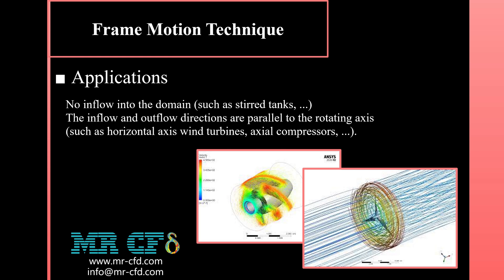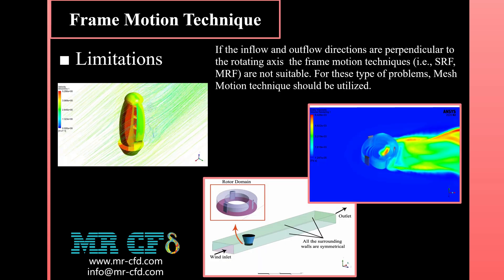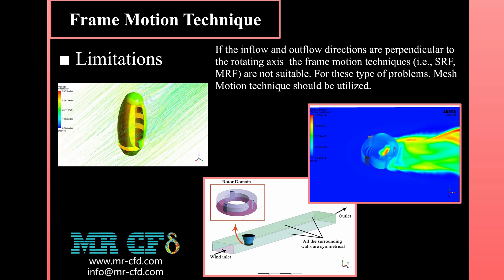The frame motion technique can be exploited only for applications in which there is either no inflow into the domain, such as stirred tanks, or the inflow and outflow directions are parallel to the rotating axis of the investigated turbomachines, such as horizontal axis wind turbines and axial compressors. For problems where the inflow and outflow directions are perpendicular to the rotating axis, the frame motion techniques — SRF and MRF — are not suitable and cannot be used.